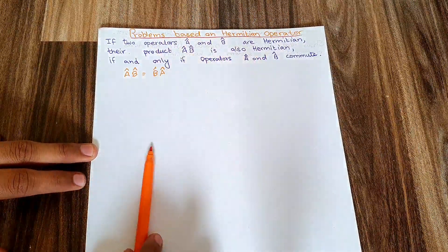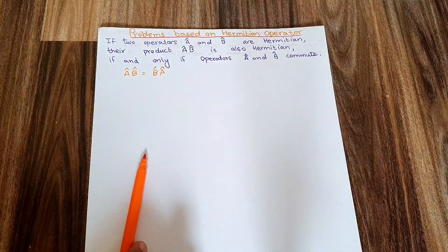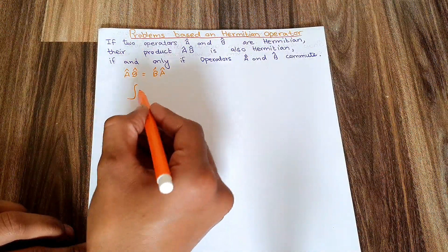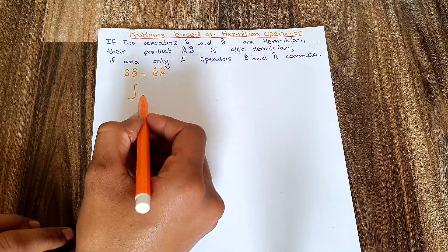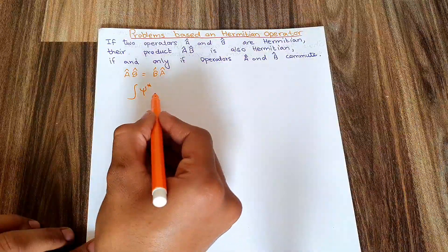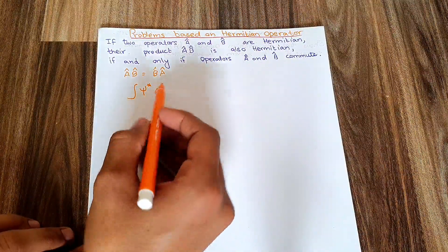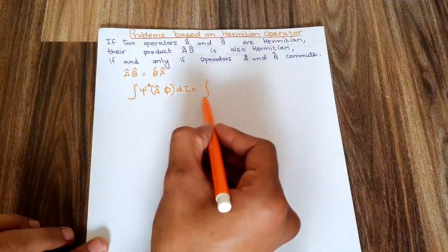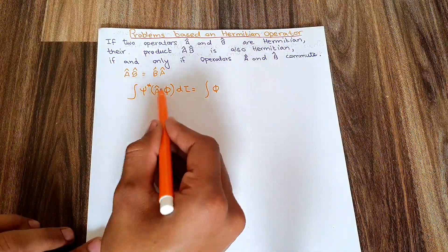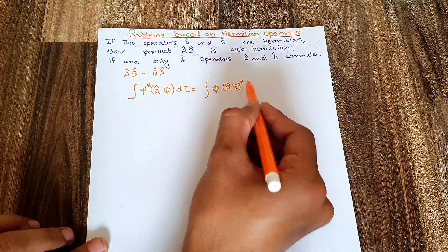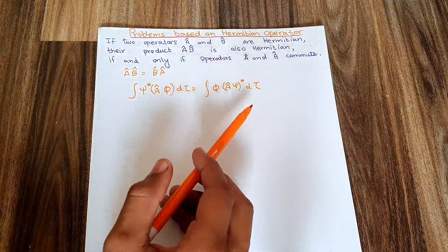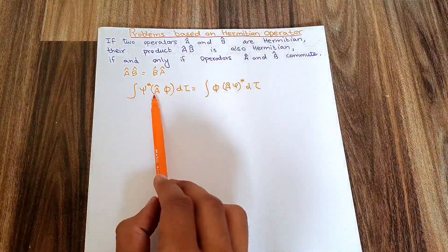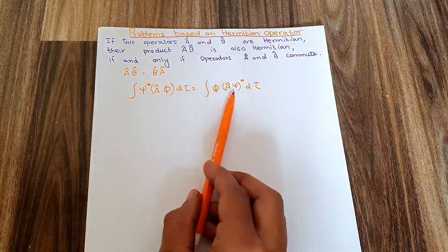I am going to describe all of this in this video. As you know, the condition for a Hermitian operator is given by the equation: the integral of ψ* with operator A applied on φ dτ should be equal to the integral of φ with operator A applied on ψ* dτ. The left-hand side and right-hand side should be the same whether the operator is applied on φ or on ψ*.